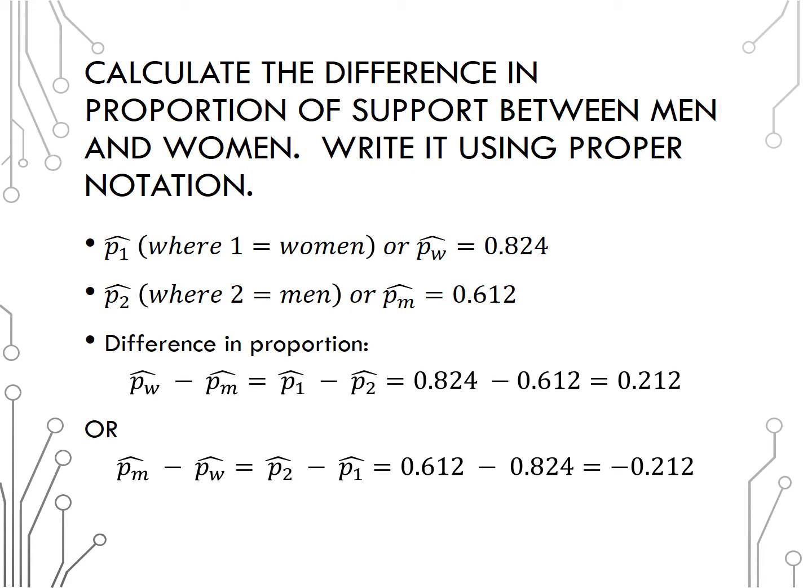Let's calculate the difference in proportion of support between men and women. p hat 1, where 1 equals women, or I could write that as p hat w, is 0.824. And p hat 2, where 2 is men, or I could write that as p hat m, is 0.612.